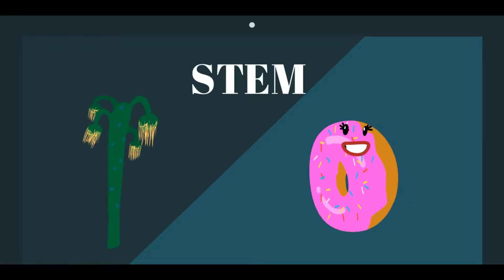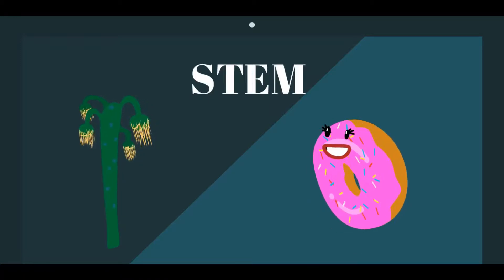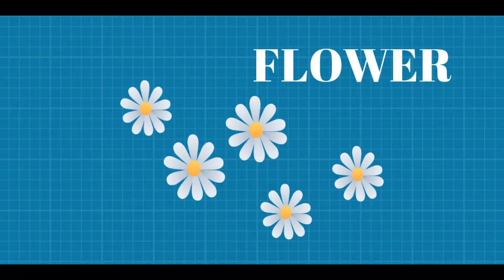The stem acts like a pillar and holds the plant all together. These are the flowers. These attract insects which help in pollination, and these are the most beautiful parts of the plant.